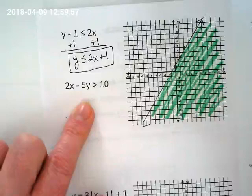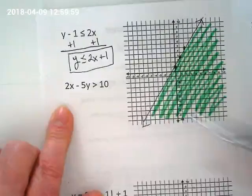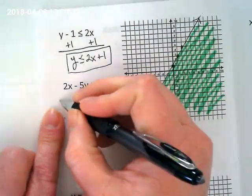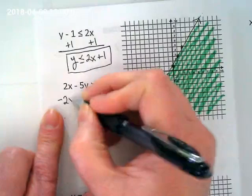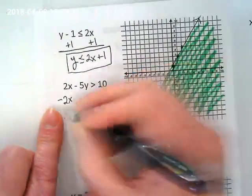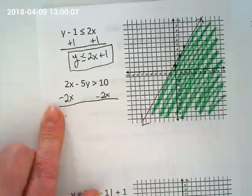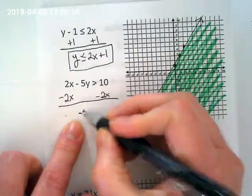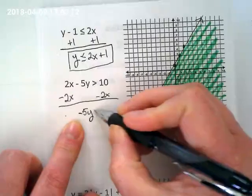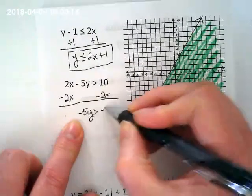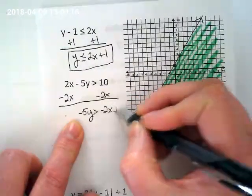There's both things. I heard the 5 and I heard the 2x. Let's do the 2x first. What are we going to do with it? Subtract it. We're going to slide it into its right place. But first we've got negative 5y is greater than negative 2x plus 10.